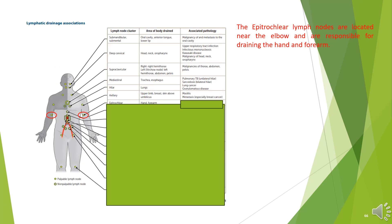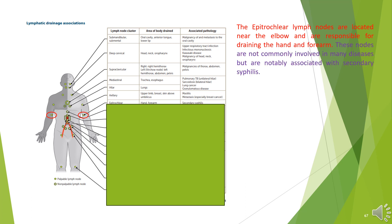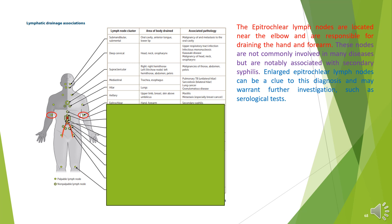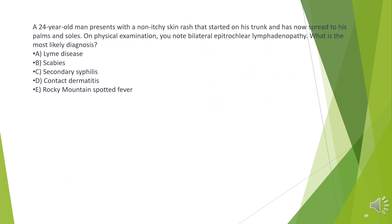The epitrochlear lymph nodes. The epitrochlear lymph nodes are located near the elbow and are responsible for draining the hand and forearm. These nodes are not commonly involved in many diseases but are notably associated with secondary syphilis. Enlarged epitrochlear lymph nodes can be a clue to this diagnosis and may warrant serological tests.